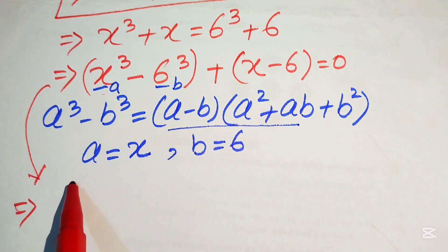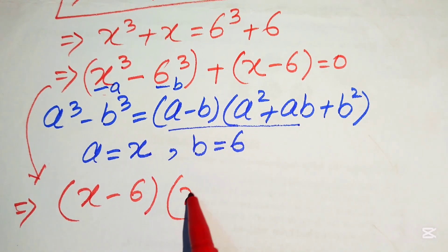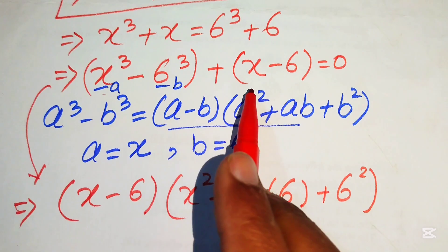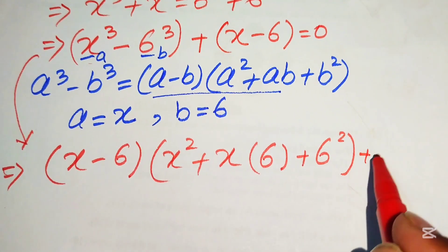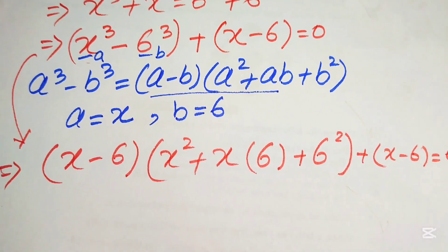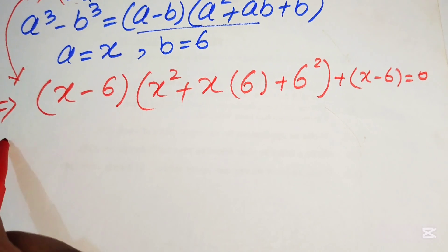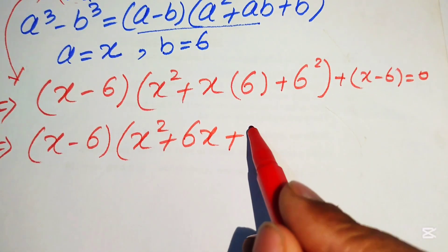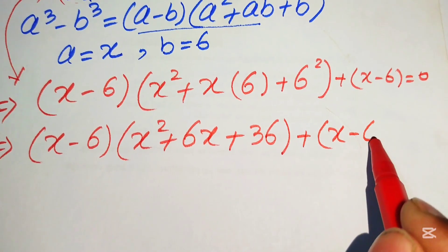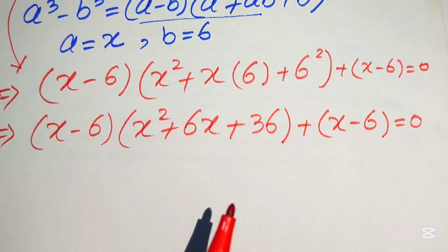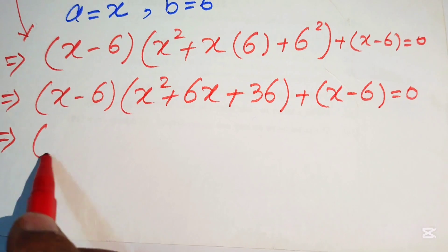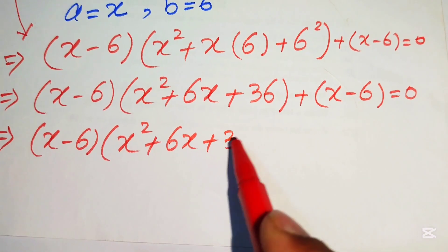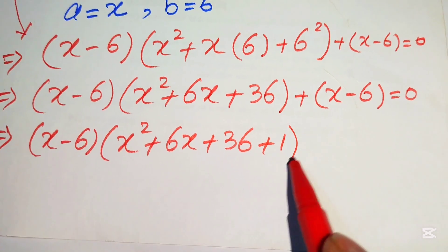Applying the formula, we get (x minus 6)(x² plus 6x plus 36) plus (x minus 6) equals 0. Since (x minus 6) is a common factor, we factor it out to get (x minus 6)(x² plus 6x plus 36 plus 1) equals 0, which gives (x minus 6)(x² plus 6x plus 37) equals 0.